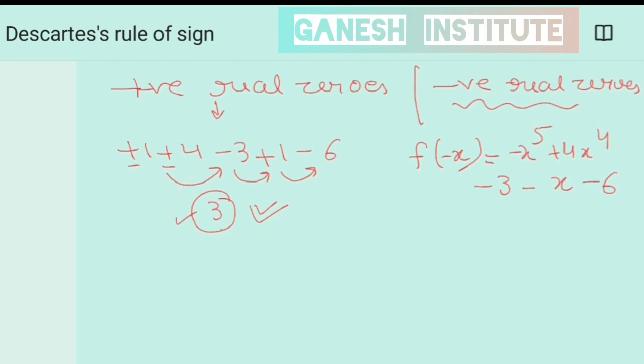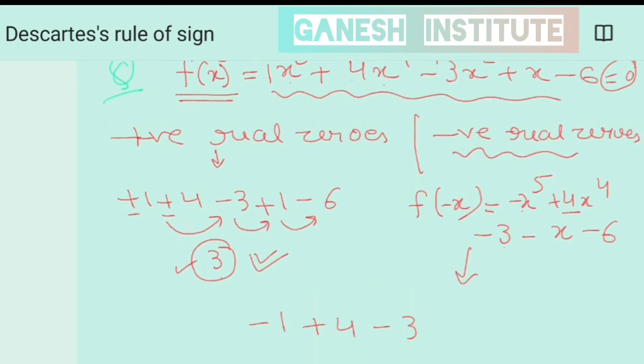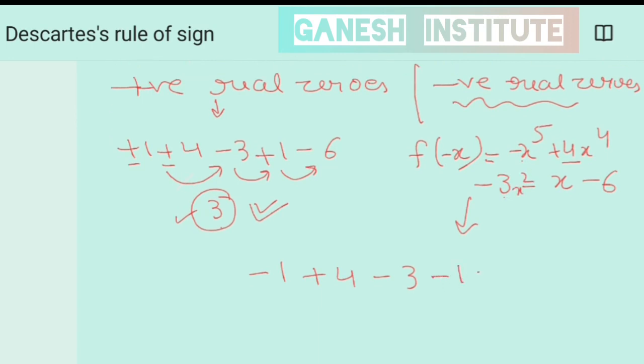Now again tell me, just write down the coefficients. This is minus 1, then plus 4, then minus 3, then minus 1, then minus 6.